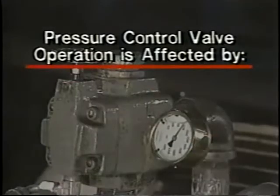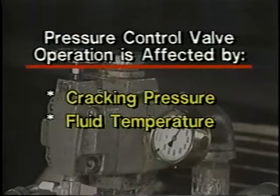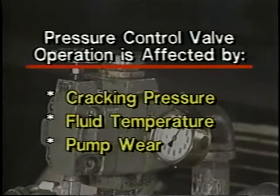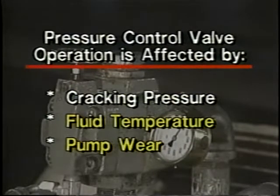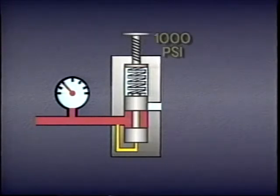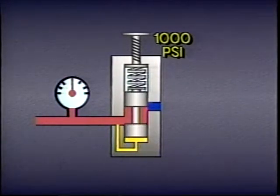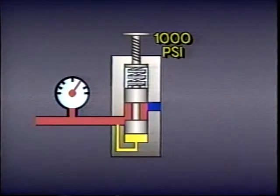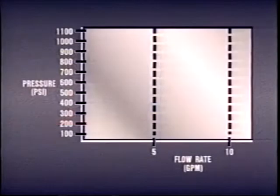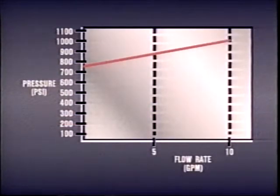Three factors are important for the correct operation of pressure control valves: cracking pressure, fluid temperature, and pump wear. Each may require adjustments to pressure control valves to maintain proper operation. The pressure at which a normally non-passing pressure control valve begins to open — the cracking pressure — is less than the rated pressure of the valve. For example, if a relief valve is adjusted to open at 1,000 psi, it will actually start to open before that, probably around 800 psi or less. As pressure climbs toward 1,000 psi, the valve opens farther and more pump flow goes to tank. By the time system pressure reaches 1,000 psi, the valve has opened up to its rated flow.